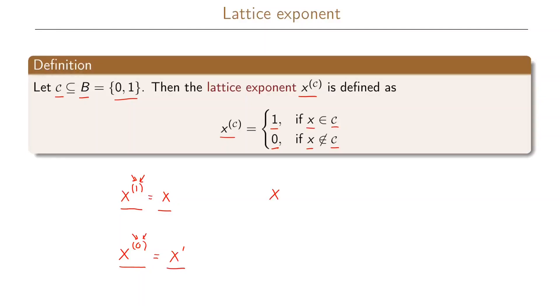If we have the lattice exponent x^B here, where B is the set of both 0 and 1, this will always take the value 1, because regardless if x is 0 or 1, it will always belong to this set.